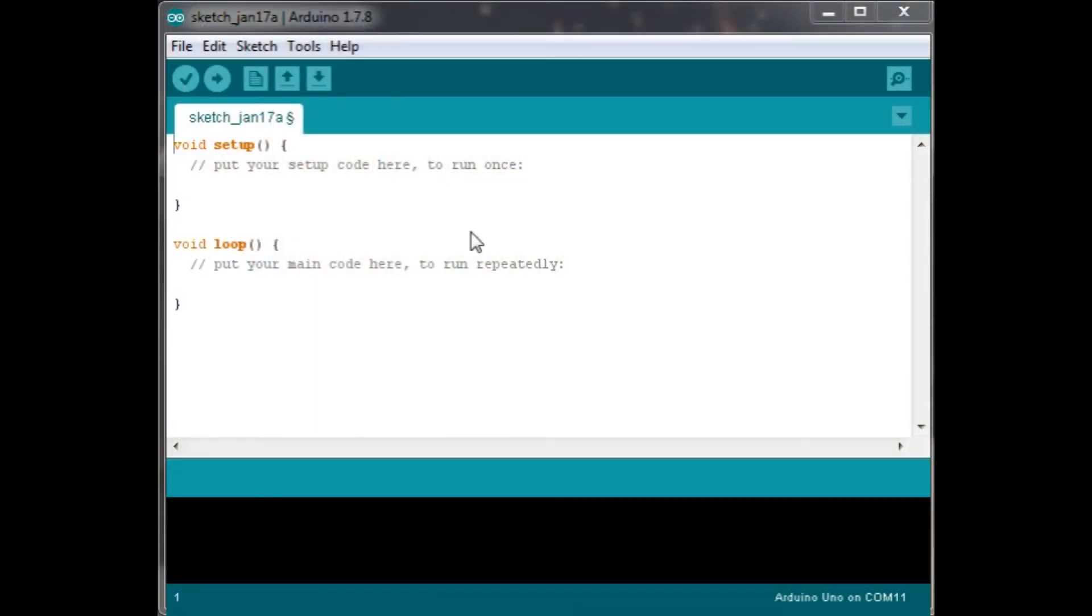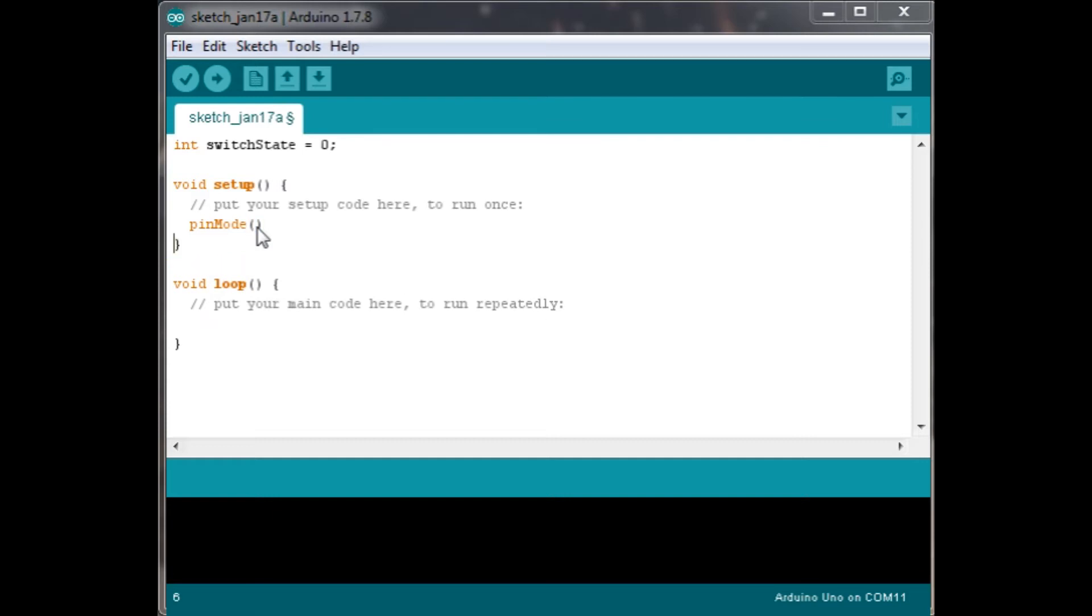Here we are in our Arduino program. First thing we want to do is create a new integer, int switch state equals zero. Then we go into the setup and set pin mode 3 as output. We're going to have 2 is input, 3, 4 and 5 are output. So pin mode 2 is input, and we'll copy paste that, and we'll have 3 is output, and 4 and 5 will also be output as well.